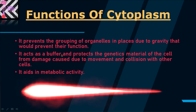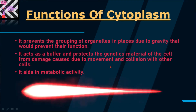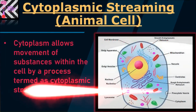Another function is it acts as a buffer and protects the genetic material of the cell from damage caused due to movement and collision with other cells. The cell's pH is controlled and the genetic material is protected. Next, it acts in metabolic activities — functions like growth and other processes. Every such function is controlled by the cytoplasm because all types of cell organelles are present within it. In the next video, you will learn the functions of all these organelles.